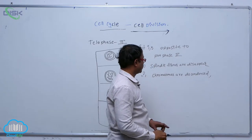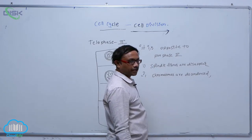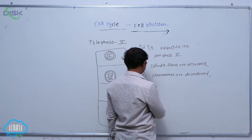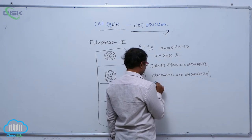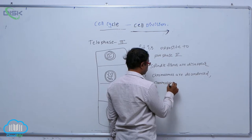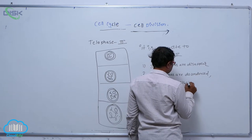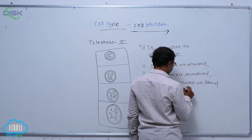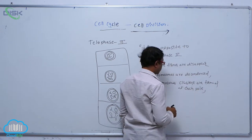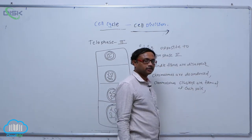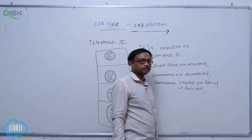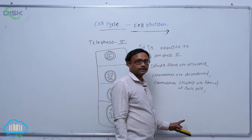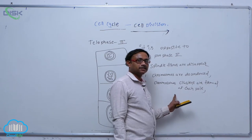After the disappearance of spindle fibers, chromosomes are decondensed. The decondensation process means chromosomes are modified into slender thread-like structures called chromatin material. These form chromosome clusters at each pole. Each chromosome cluster is then surrounded by a nuclear membrane.